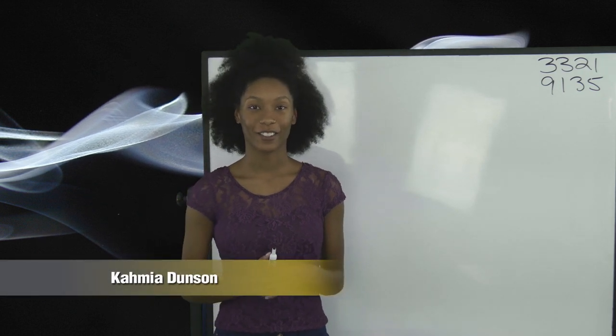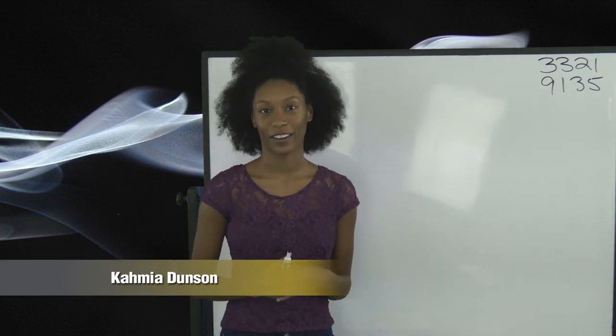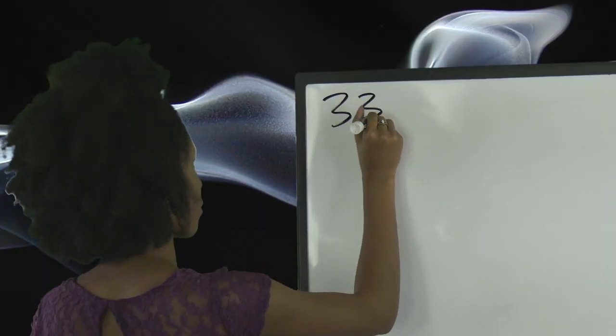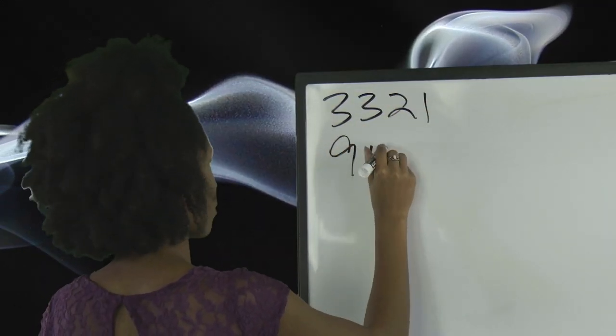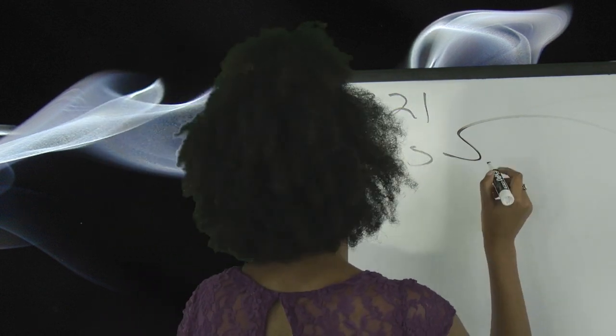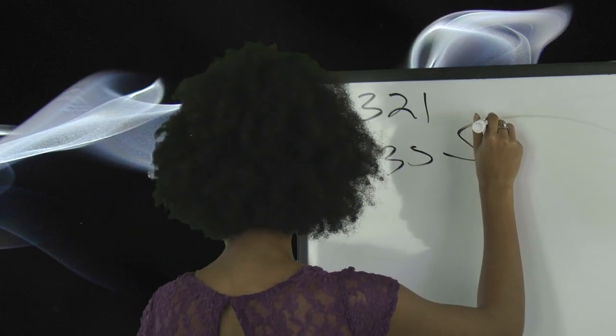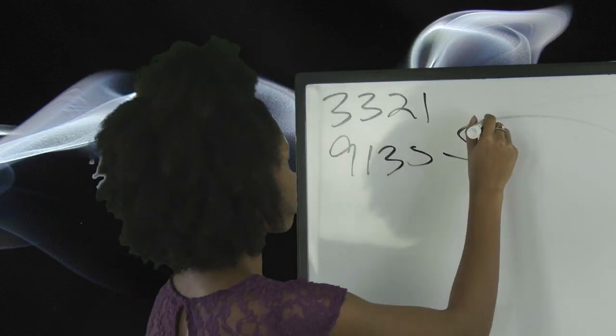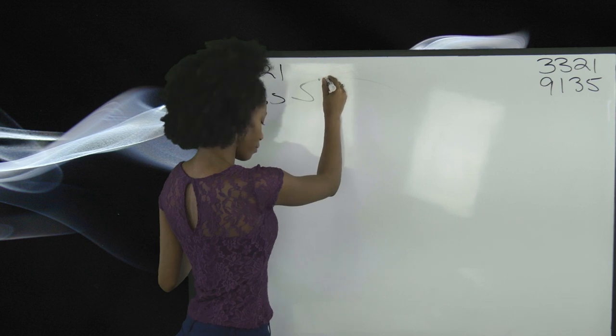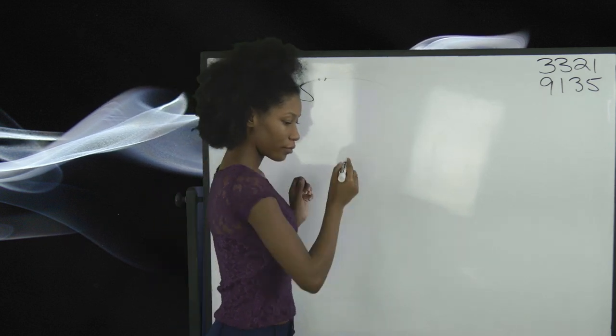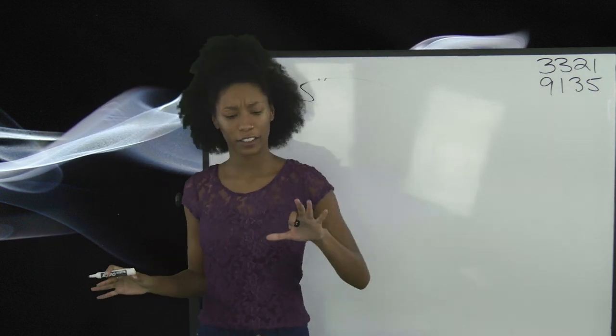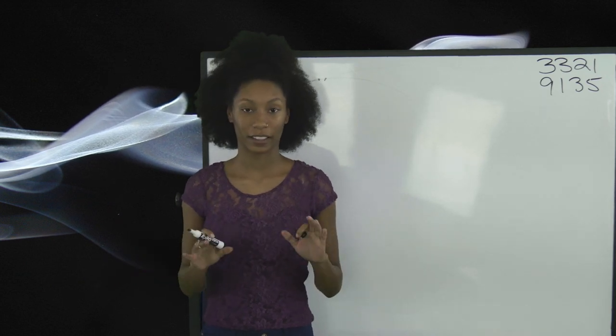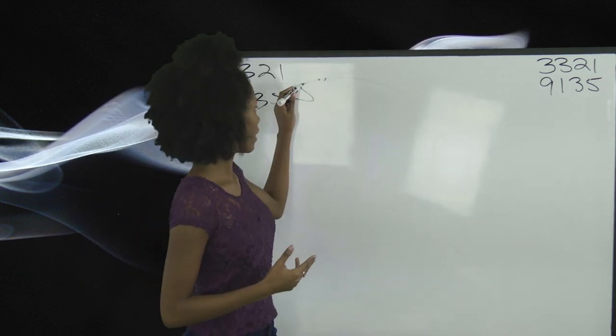Today we'll be exploring target 3-3-2-1-9-1-3-5. So my basic gestalts here are land, structures, movement, and subjects. So I have a base surface here. It has a regular topography, but it's like all land. I don't feel any water here at this target.